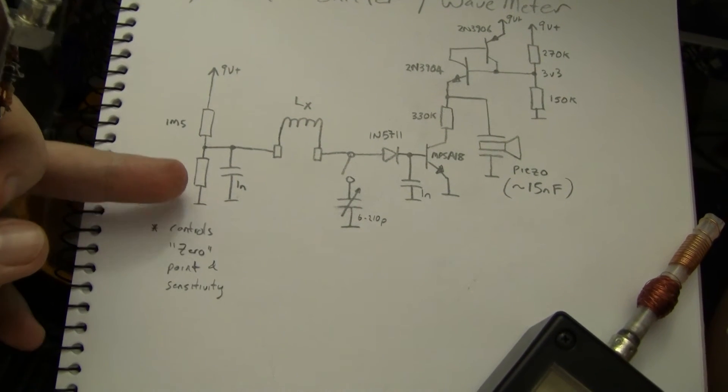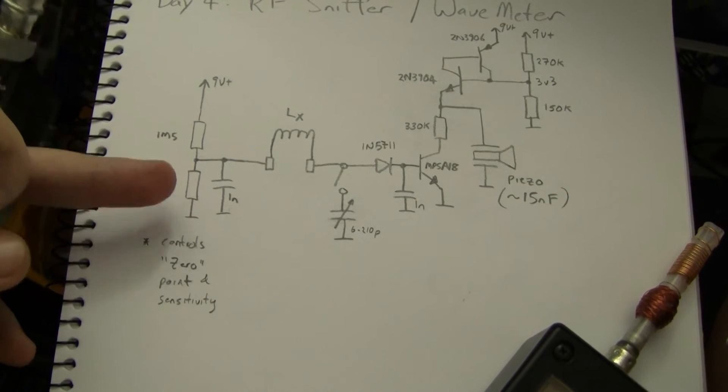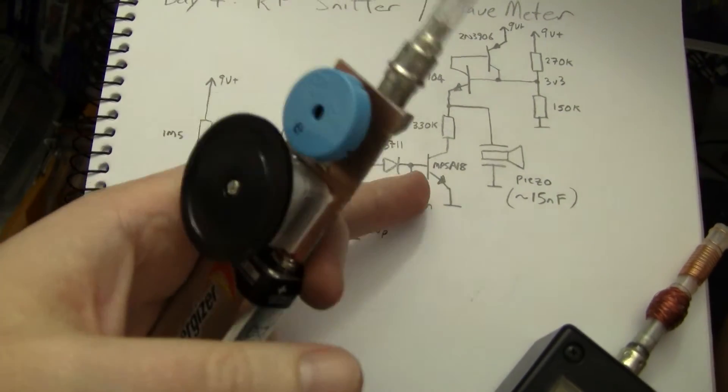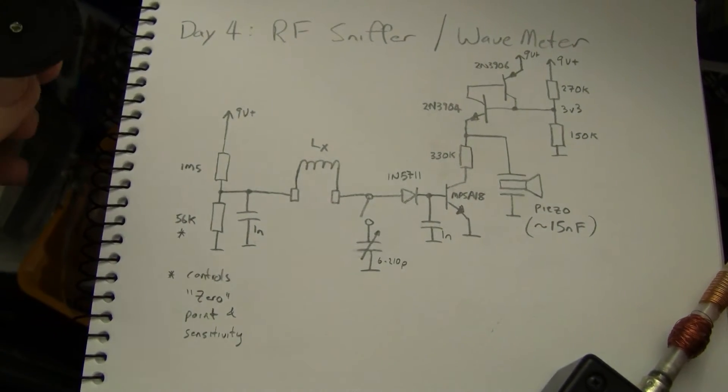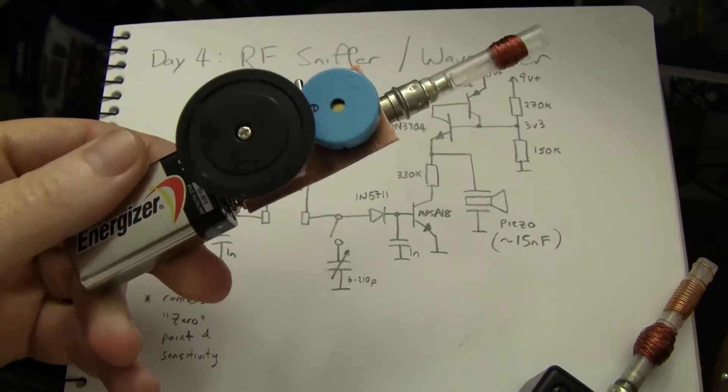You can adjust this resistor to change the sensitivity of the circuit, and you'll probably have to fiddle with it anyway, because chances are your MPSA18 might not be exactly the same as mine, but it's an easy circuit to get going on, it takes a few minutes to build.